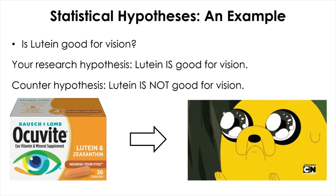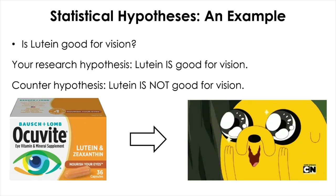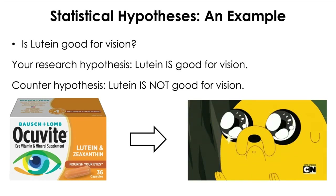In some big studies on AMD — age-related macular degeneration — the data suggested that the chemical may have some beneficial effect on slowing down the progress of the disease. However, it is not very clear if the substance will be beneficial to normal vision in general. Let's assume that you think it will be and you want to conduct research.